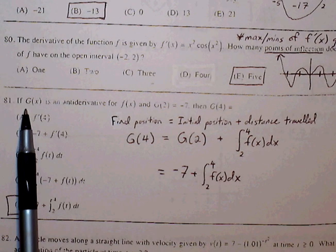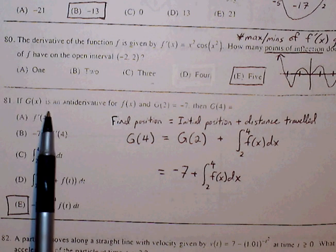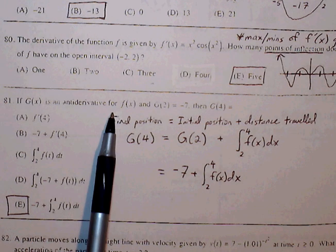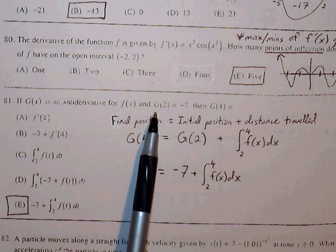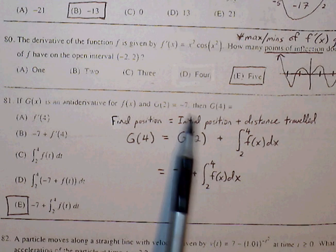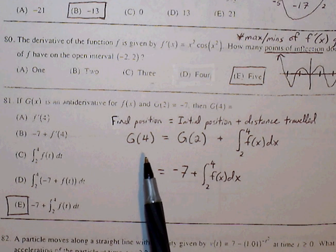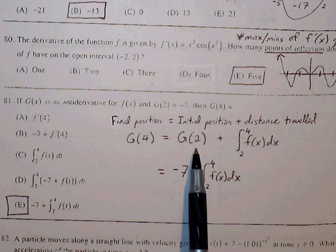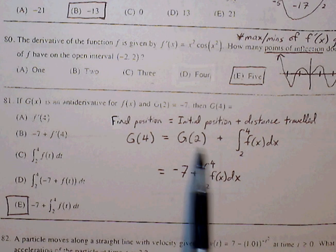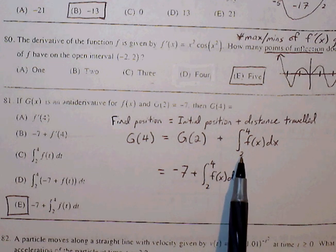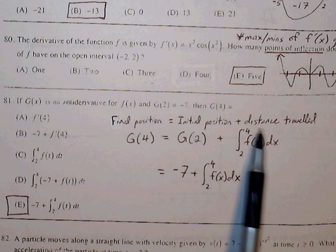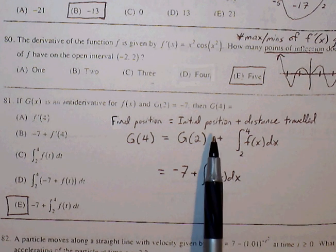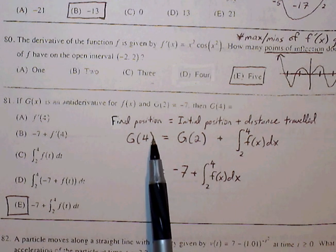81, if uppercase G of x is an antiderivative for f of x and G of 2 is equal to negative 7, then G of 4 is equal to... So if I want to find my final position, then I need my initial position, which is G of 2, plus the definite integral from 2 to 4. So this will be the distance traveled on top of the initial position, which will give me the final position.